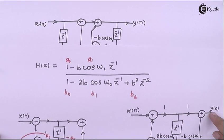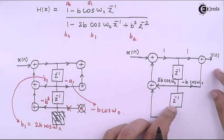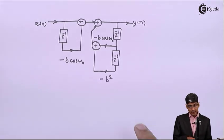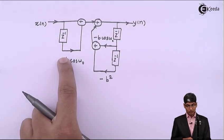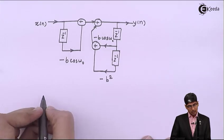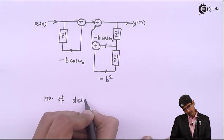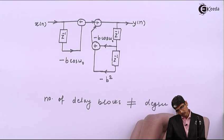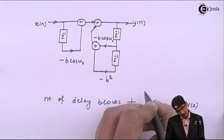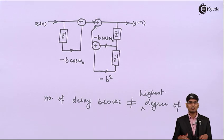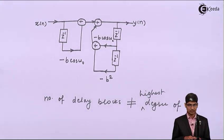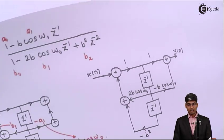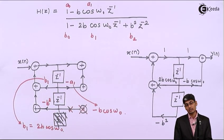Comparing both structures: in Direct Form 2 we require only 2 delay blocks, equal to the degree of the denominator polynomial. In Direct Form 1 we require 3 delay blocks — 1 for the numerator and 2 for the denominator. Since the number of delay blocks in Direct Form 1 is not equal to the highest degree of H(z), it cannot be called a canonic structure. Direct Form 2, where the delay count equals the polynomial degree, is the canonic structure.